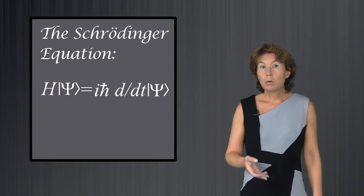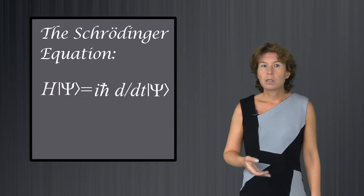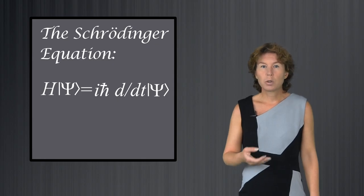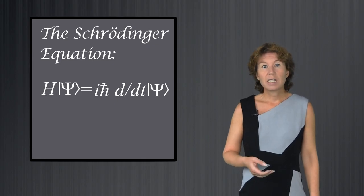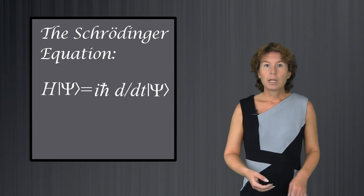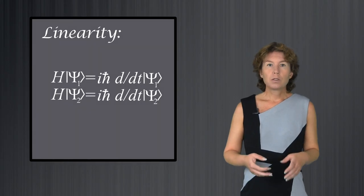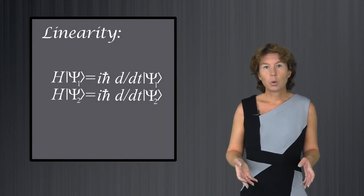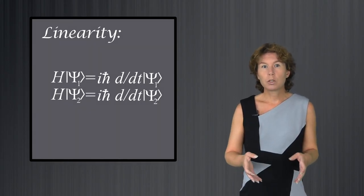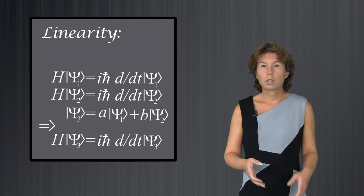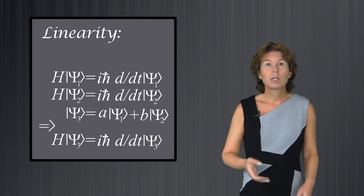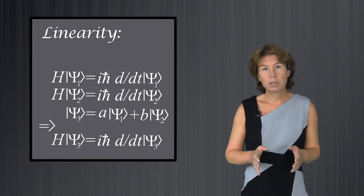Another important property is that the change in time which one gets from the Schrödinger equation is reversible. But for our purposes, the most important property of the Schrödinger equation is that it is linear. This means if you have two solutions to this equation, then any sum of the two solutions with arbitrary pre-factors will also be a solution.